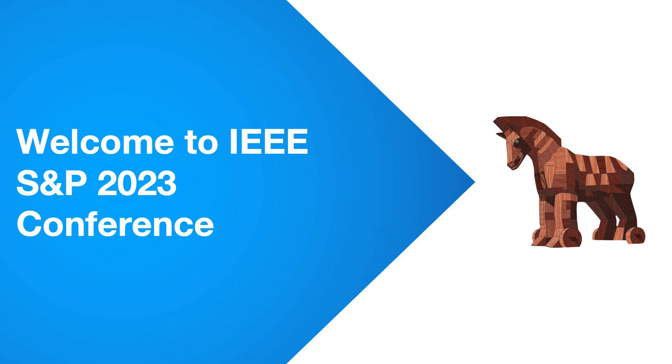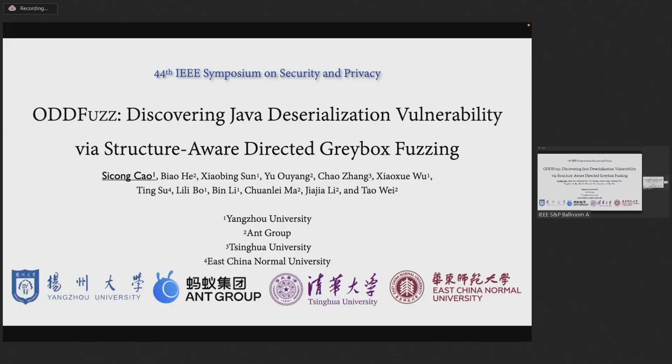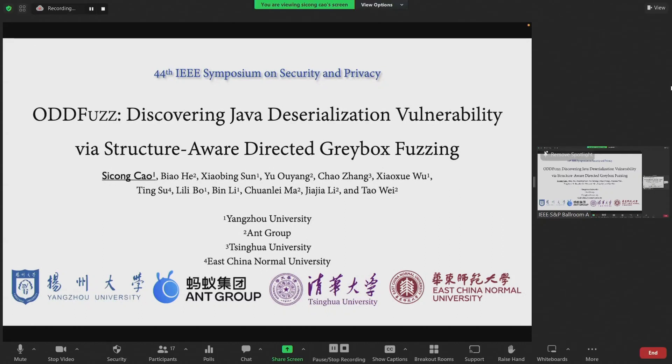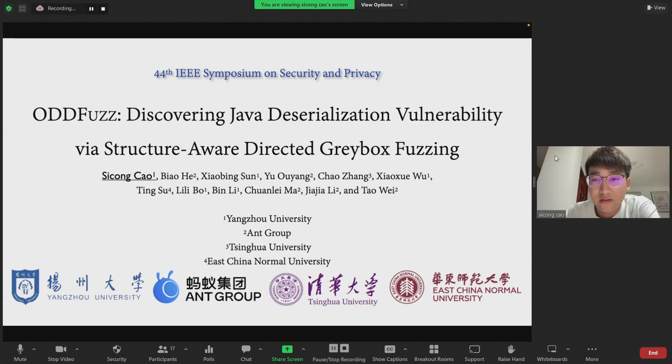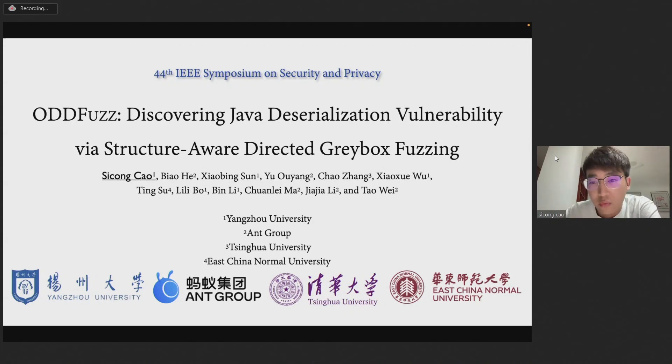Hello, everyone. My name is Song Cao. I'm from Yangzhou University in China. It's my honor to introduce our latest work, AuditFast: Discovering Java Deserialization Vulnerabilities via Structure-Aware Directed Greybox Fuzzing.